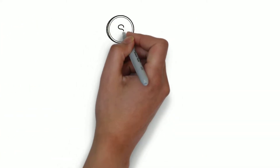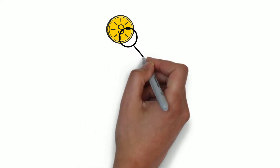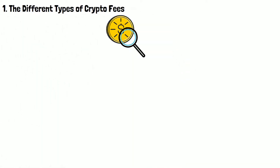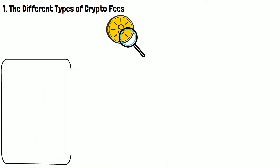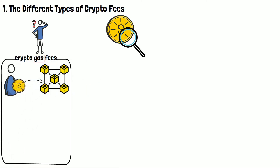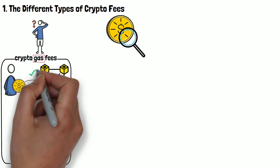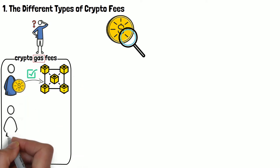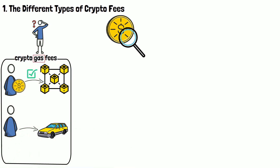Now then, to start things off, and before we get into the specifics of crypto fees, we should first establish what sorts of fees you might come across when you're buying, selling or trading crypto. Starting out from the top, you'll find that the most interesting type of fees are the crypto gas fees, also known as blockchain fees. Gas is a strange term, but essentially it refers to the fee that you need to pay to the network in order for your transaction to be submitted and eventually approved. You could look at it as actual gas that you put into your car, as well.